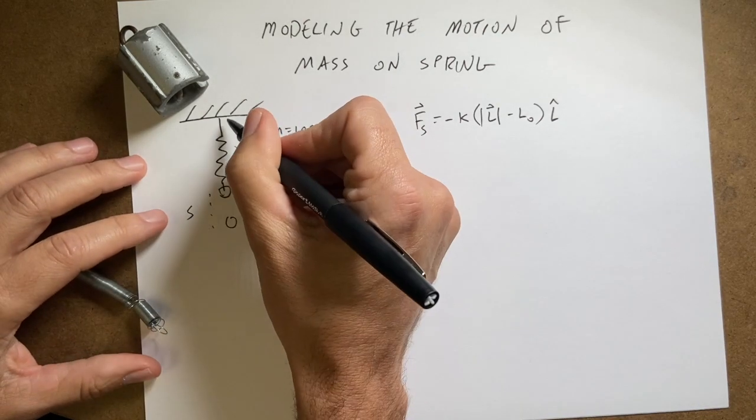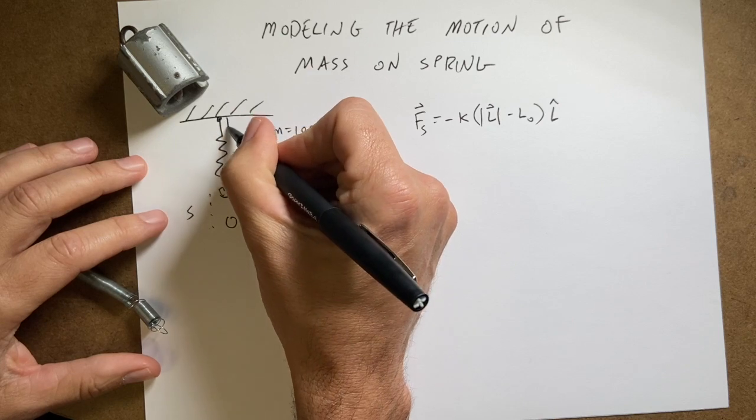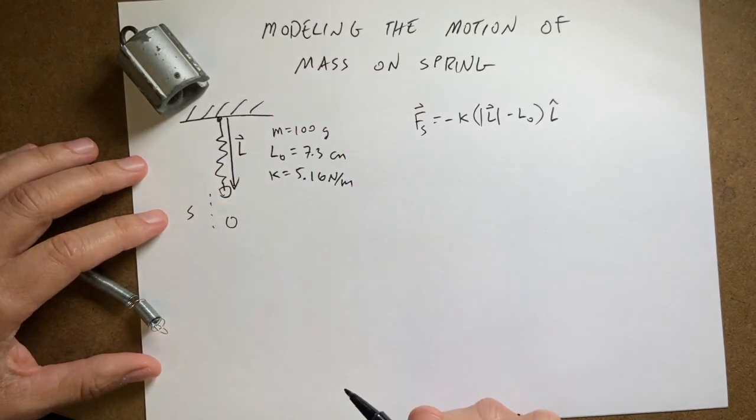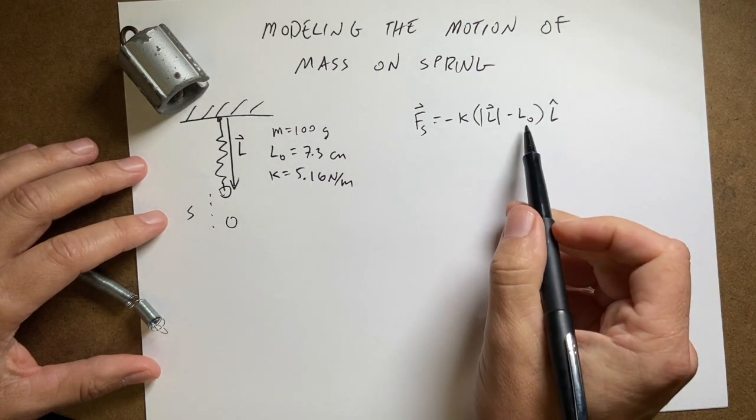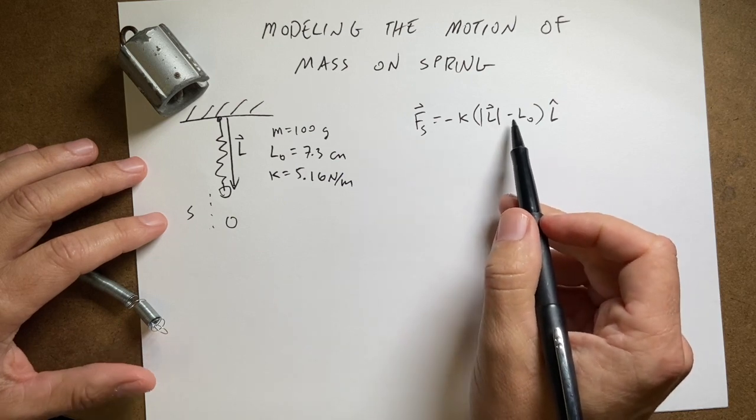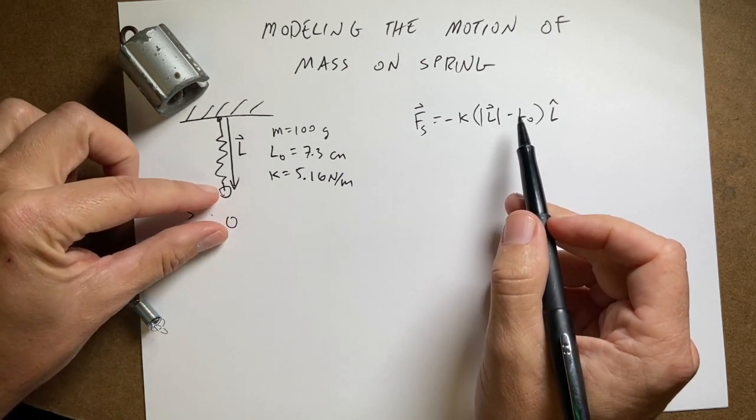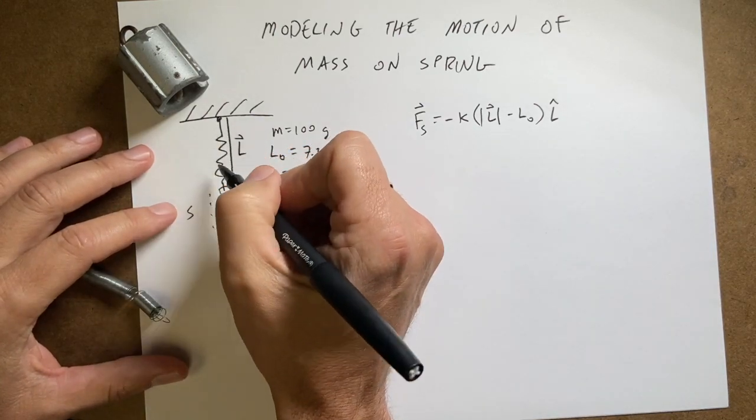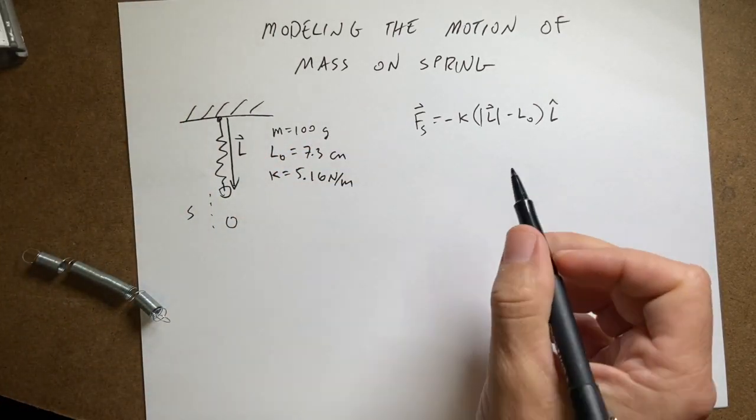L is the vector from the beginning of the spring to the end of the spring. L0 is the unstretched length of the spring and so this is the magnitude. So I take the difference in these two and that gives me the value for s. And then L hat is a unit vector in the direction of the spring to make this a vector.